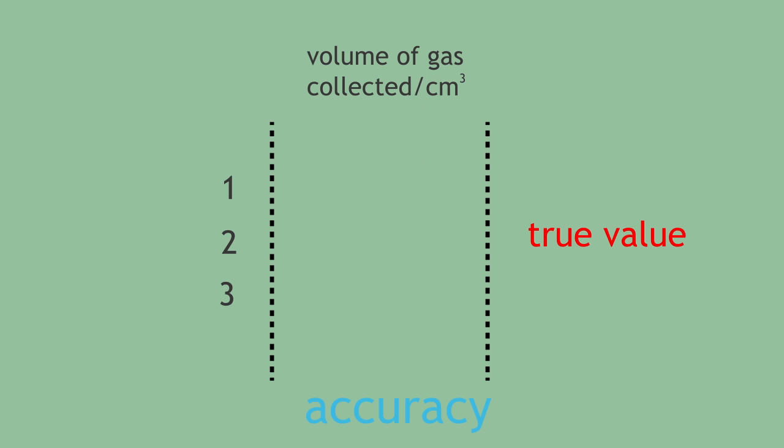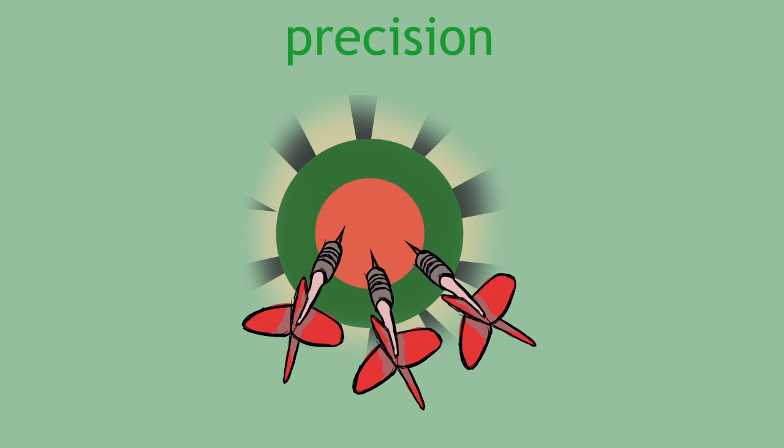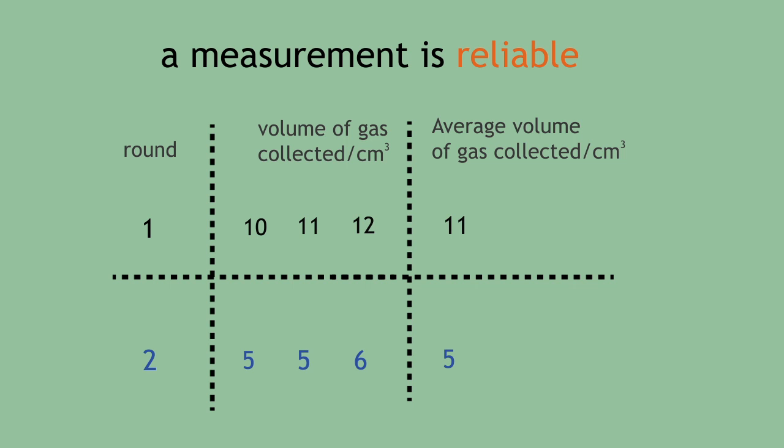In summary, accuracy is how close your measurement is to the true value. It can be improved by taking an average of your closest measurements. Precision is how close each measurement is to each other and the average value. And finally, a measurement is reliable if the measurements can be repeated by you and are found to be similar to someone else who has done the same experiment.